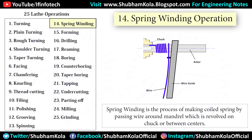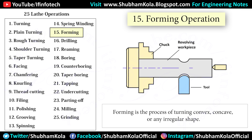Spring winding is the process of making a coil spring by passing wire around a mandrel which is revolved on a chuck or between centers. A small hole is provided on a steel bar supported by the tool post, and the wire is allowed to pass through it. Forming is the process of turning convex, concave, or any irregular shape. Form turning may be accomplished using a forming tool, by combining cross and longitudinal feed, or by tracing or copying a template. Generally, two types of forming tools are used — straight and circular.